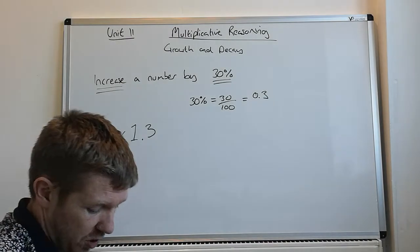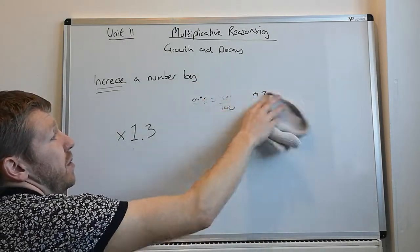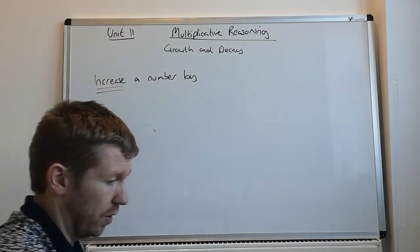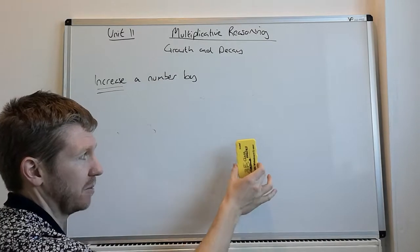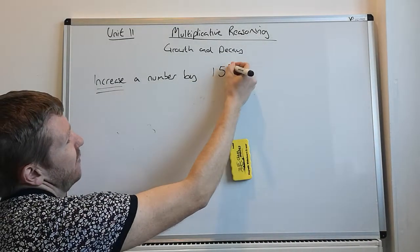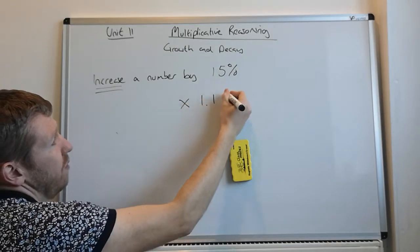Similarly, if we change that to increase a number by say 15%, still using my stock at the moment, although I have got a rubber and it's magnetic, look at that, I love that, increase by 15%, you multiply by 1.15.